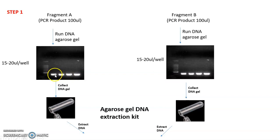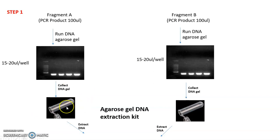You have to cut the correct band of the DNA gel under UV light and collect all pieces of the DNA gel into a 1.5 mL tube. Once you have cut and collected all pieces into the 1.5 mL tube, use an agarose gel DNA extraction kit — available in the market — to extract the DNA from the agarose gel.